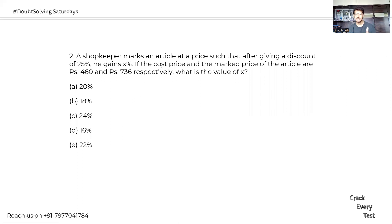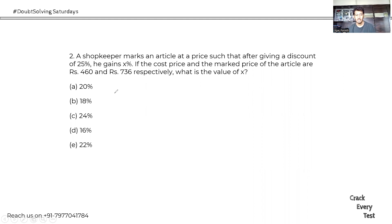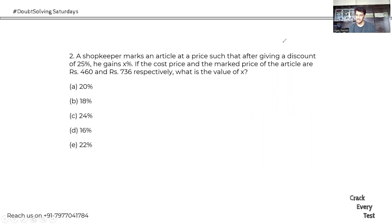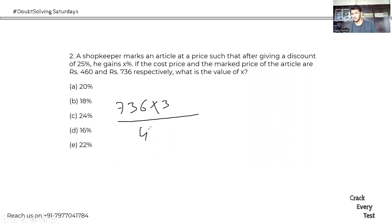Next question: a shopkeeper marks an article such that after giving a 25% discount he gains x percent profit. The cost price is 460 and the marked price is 736. To find x, we calculate the selling price: SP = 736 × (3/4), which we then divide by the cost price 460 to find the profit percentage.